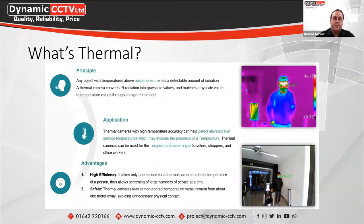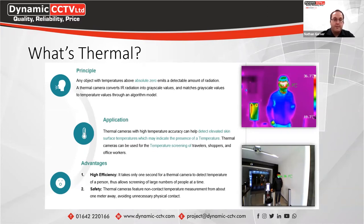A standalone unit works at plus or minus 0.5 degrees. You can use it in conjunction with the Blackbody calibrator, which brings the accuracy to within plus or minus 0.3 degrees. However, the calibrator must be in the image of the thermal lens. The unit only takes one second to detect whether there's an elevated temperature, and that can be logged within HikCentral for an employee.